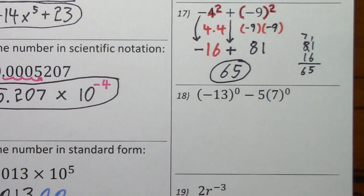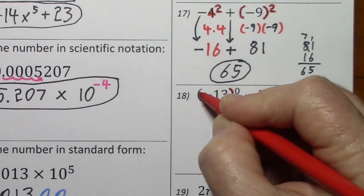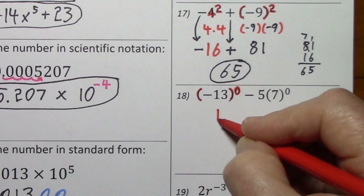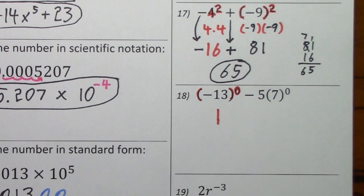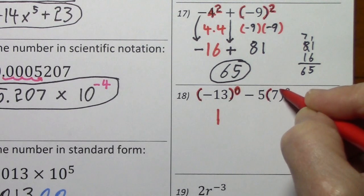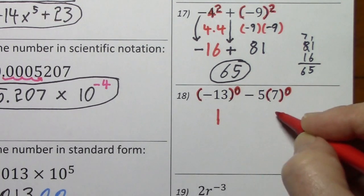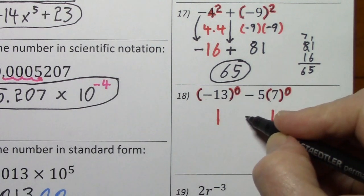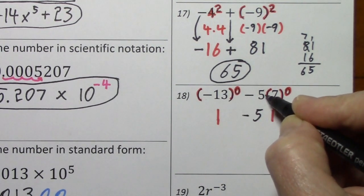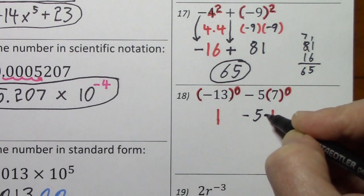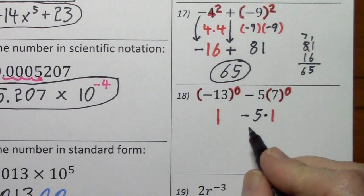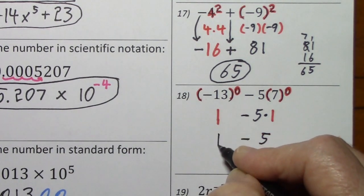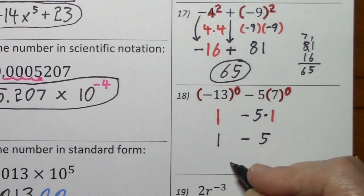Looking at 18: whatever is in the parentheses is being raised to the zero power, so this all becomes a one. Here whatever is in parentheses is raised to zero, so it becomes one. We bring down the negative five — it's sitting next to parentheses so it's supposed to multiply. So this gives us negative five times one, and then we have the remaining term.